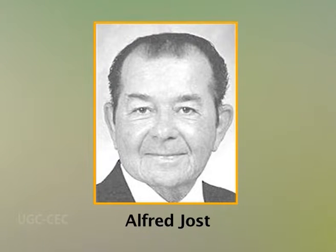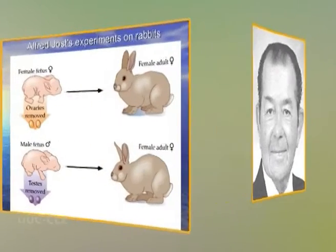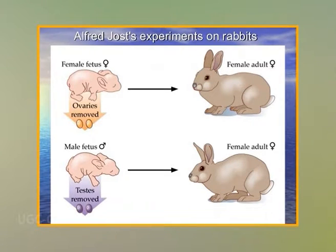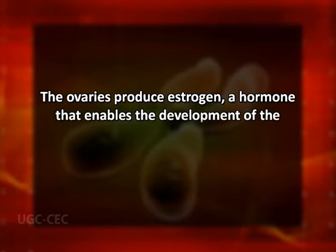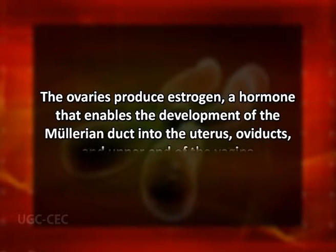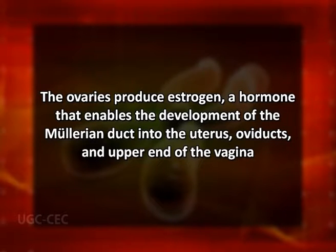However, in the absence of gonads, the female phenotype is generated. When Jost in 1953 removed fetal rabbit gonads before they had differentiated, the resulting rabbits had a female phenotype regardless of whether they were XX or XY. They each had oviducts, a uterus and a vagina, and each lacked a penis and male accessory structures. If the Y chromosome is absent, the gonadal primordia develops into ovaries. The ovaries produce estrogen, a hormone that enables the development of Müllerian ducts into uterus, oviducts and upper end of the vagina.